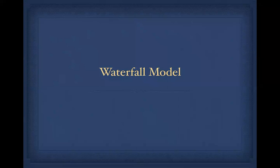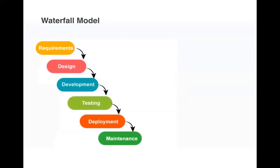In the waterfall approach, the process of software development is divided into different phases. It illustrates a linear sequential flow, which means the second phase starts only when the first phase is completed. The different phases included are: requirement gathering, design, development or implementation, testing, deployment, and maintenance.